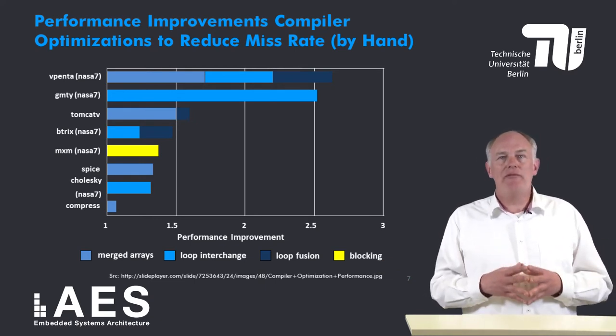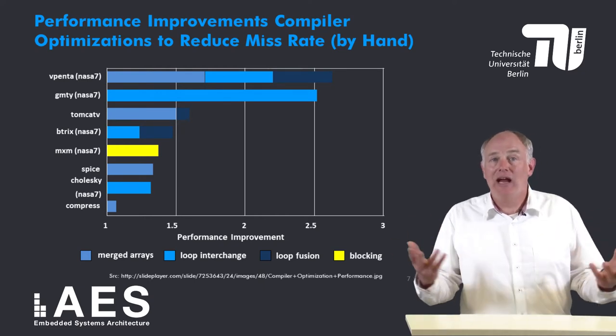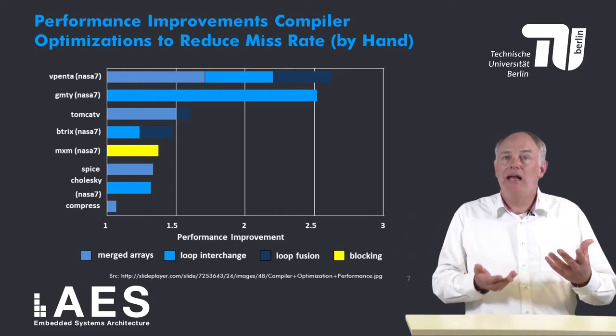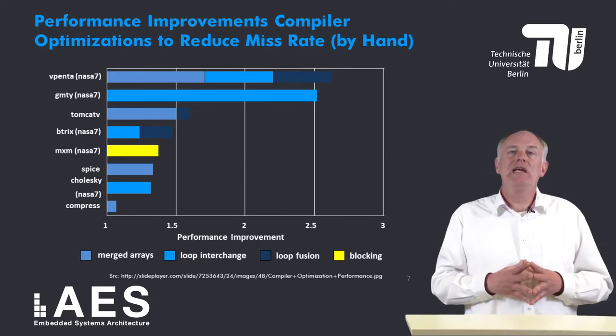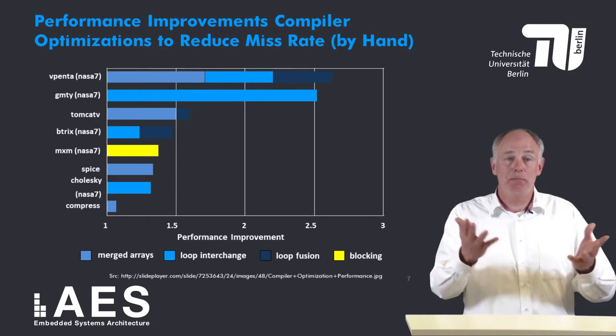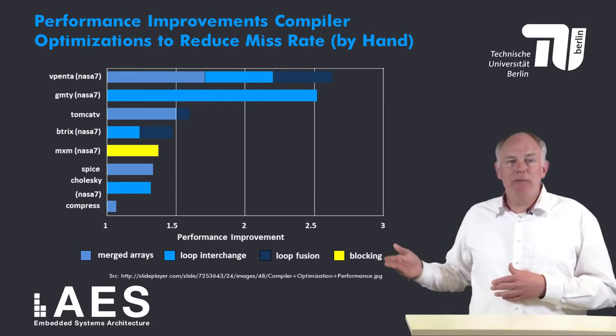Often, however, compilers lack certain information, such as that the arrays are not overlapping, and you either need to give them a hand, give them some hints, or you need to perform these optimizations manually yourself.